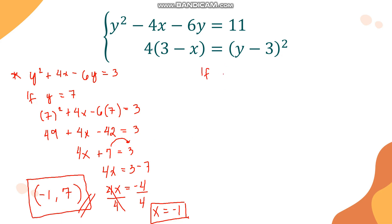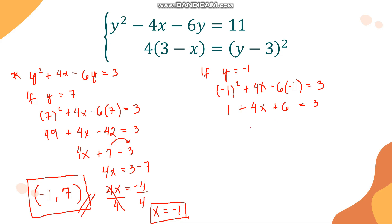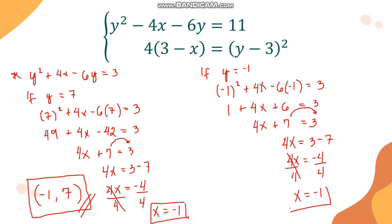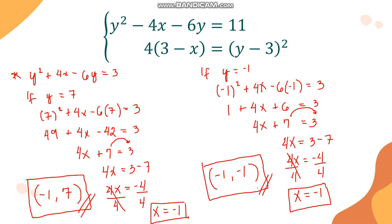So if y equals 7, x equals negative 1, giving first solution (negative 1, 7). For y equals negative 1: (negative 1) squared plus 4x minus 6(negative 1) equals 3, giving 1 plus 4x plus 6 equals 3, so 4x plus 7 equals 3, 4x equals negative 4, and x equals negative 1.